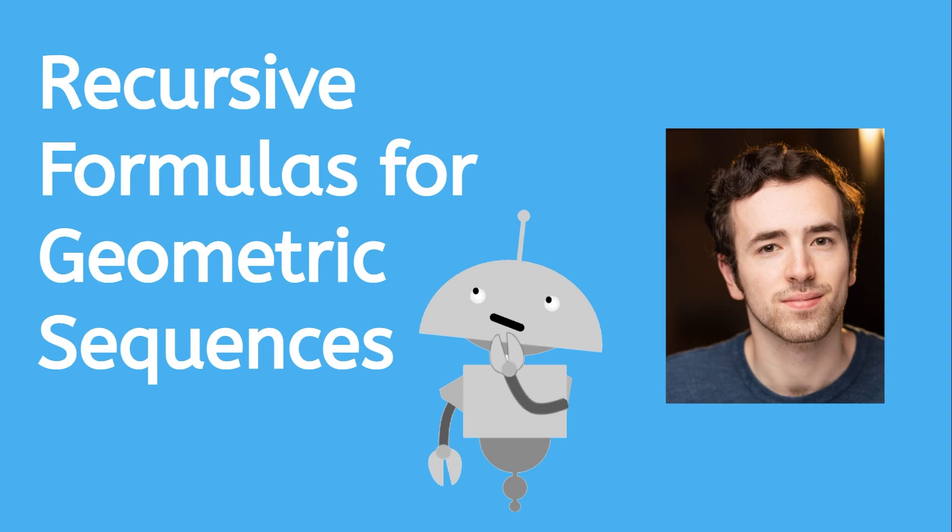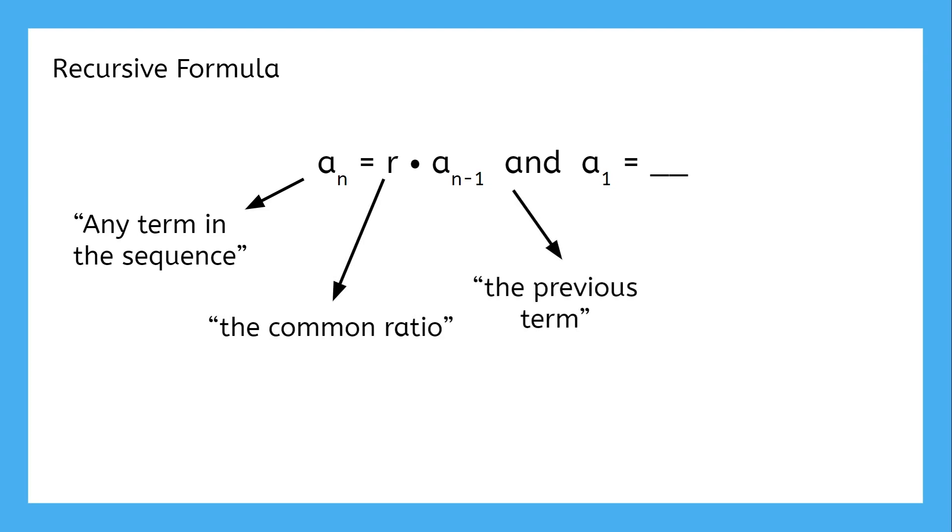The recursive formula for geometric sequences is fairly simple. We already know what everything here means: any term in the sequence is equal to the common ratio times the previous term, and we have to know what the first term is. It's just a fancy way of writing 'multiply by the common ratio to get the next term.'